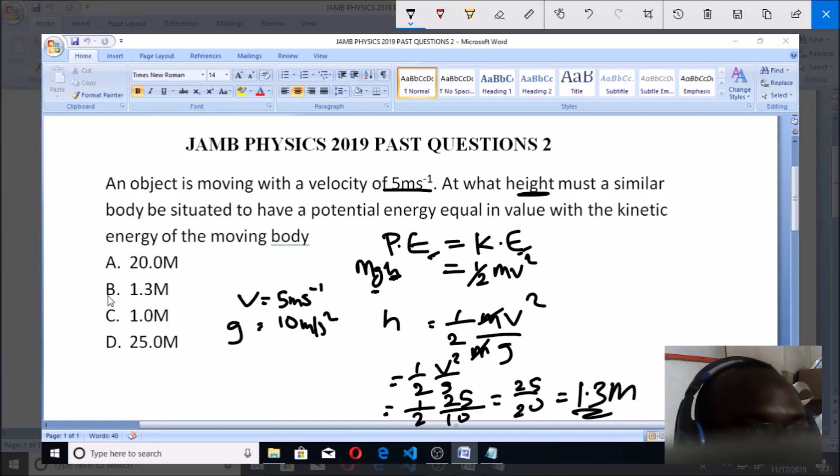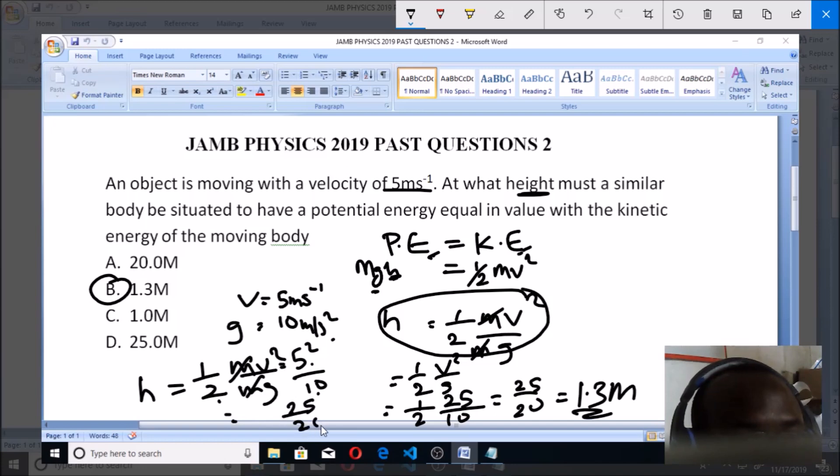So that's your answer: 1.3 is the answer. You see what we have here, we make h the subject so that h = ½mv² over mg. m cancels m, v is 5², which is 25, over g which is 10. 2 times 10 is 20, 5² is 25, so you have 25 over 20 which equals 1.3 meters, and that makes B the right answer.